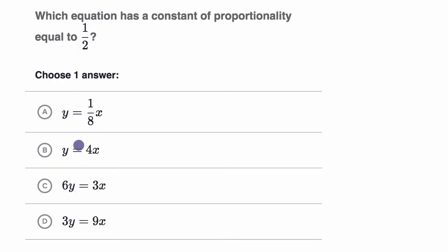I'm just gonna go equation by equation and calculate their constants of proportionality and see which one has a constant of proportionality equal to 1 half. So this one right over here, choice A, clearly has a constant of proportionality of 1 eighth. So we can just rule that out.